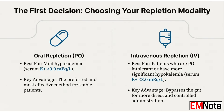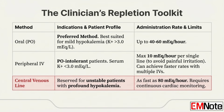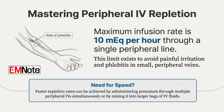Let's discuss speed and route. For mild cases — say, above 3.0 — oral is preferred. You can give it pretty briskly: 40 to 60 milliequivalents per hour. But if we need to move faster, we go intravenous. The strict standard limit for a single peripheral IV line is 10 milliequivalents per hour. It's entirely about patient comfort and vein safety — pushing potassium faster into a small peripheral vein is incredibly painful and can cause phlebitis.